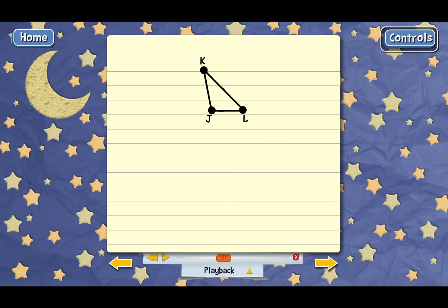Two of the angles of this triangle are angles K and L. What's the third angle? That's right.